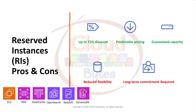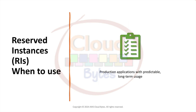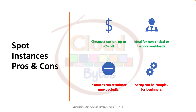Some services that support reserved instances are EC2, RDS, ElastiCache, OpenSearch, Redshift, and DynamoDB. Reserved instances are best used for long-term, predictable production applications.